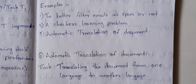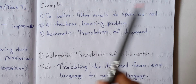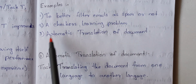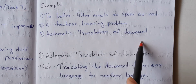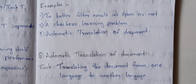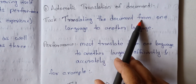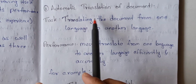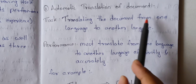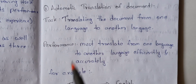In this concept, we will talk about three examples: filtering emails as spam or not, a checker's learning problem, and automatic translation of a document. For automatic translation, the task is translating the document from one language to another language.